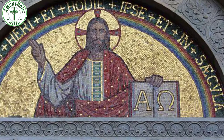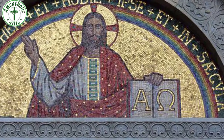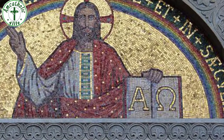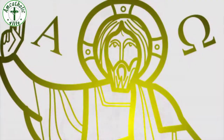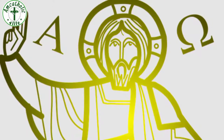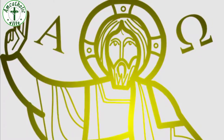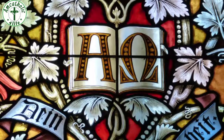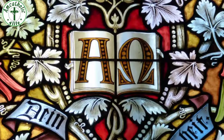Alpha and Omega are the first and last letters of the Greek alphabet. In the book of Revelation 22:13, Christ referred to himself as the Alpha and the Omega — that is, the first and the last. This symbolizes the fact that Jesus Christ is the beginning and end of all creation.